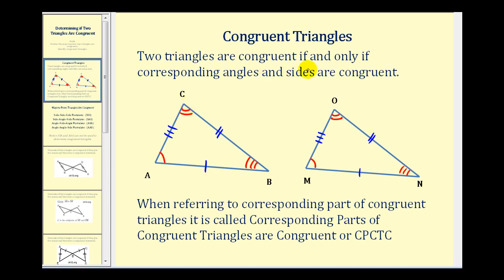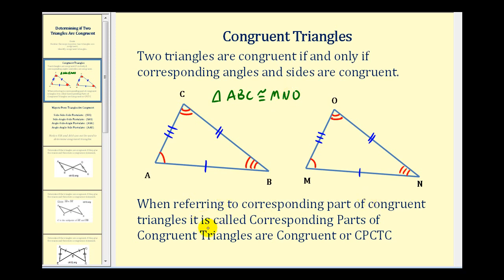Two triangles are congruent if and only if corresponding angles and sides are congruent, as we see marked here. It's important that when we identify congruent triangles, the vertices are listed in corresponding order. So if we identify this triangle as triangle ABC, it would be congruent to triangle MNO, because vertex A corresponds to vertex M, vertex B corresponds to vertex N, and vertex C corresponds to vertex O. When referring to corresponding parts of congruent triangles, it is called corresponding parts of congruent triangles are congruent, or CPCTC.